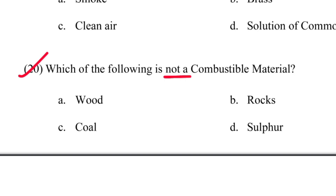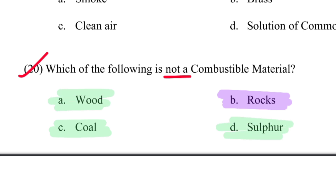Which of the following is NOT a combustible material? Options include wood, rock sand, coal, and sulfur. Wood, coal, and sulfur are combustible materials. Rock sand is not a combustible material. So the correct answer is option B — rock sand.